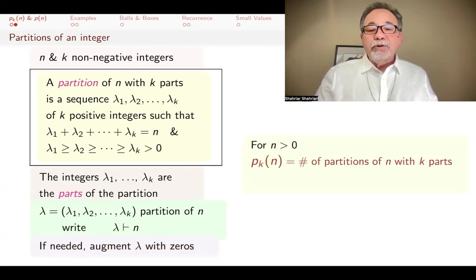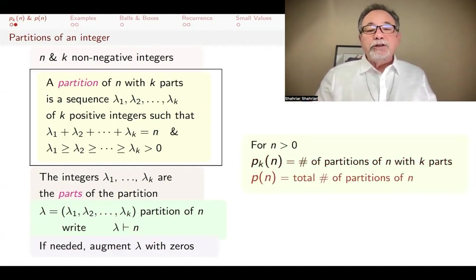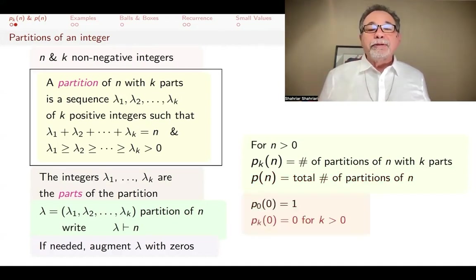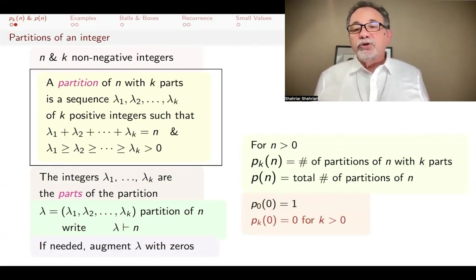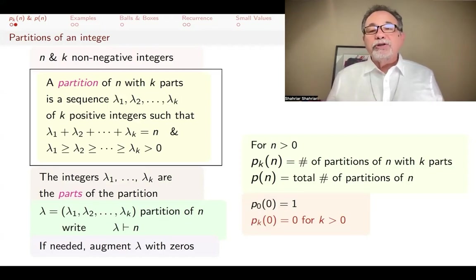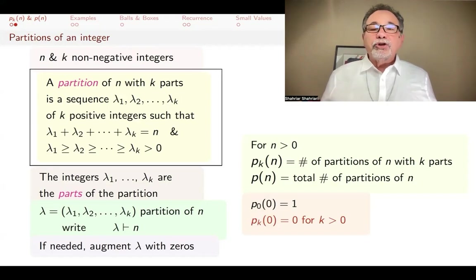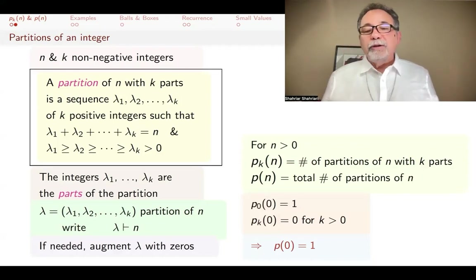For n greater than zero, p(n, k) is the number of partitions of n with k parts, and p(n) is the total number of partitions of n regardless of the number of parts. We define p(0, 0) to be one, and p(0, k) for all k greater than zero to be zero. Of course, if you have zero balls and want to put them into k non-empty parts, there's no way to do that. But if you have no balls and no parts, we call that one. As a result, p(0) equals one.